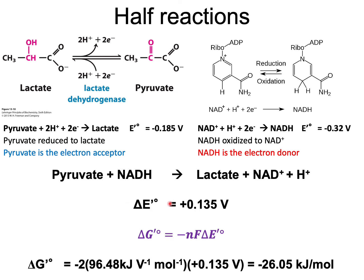Using this delta E0 value of plus 0.135 volts, we plug into the equation to find the standard free energy change: delta G0 equals minus N times F times delta E0. The standard free energy change is minus 26.05 kilojoules per mole, and this reaction is thus favorable.